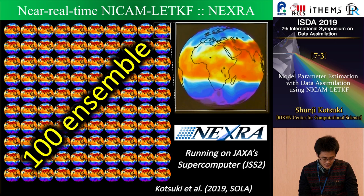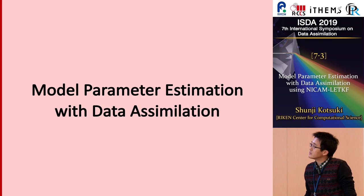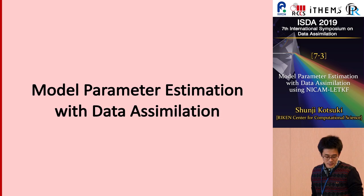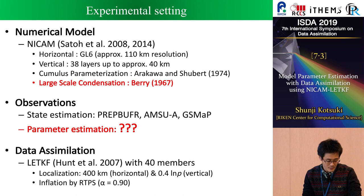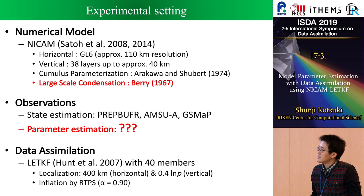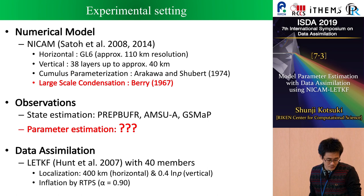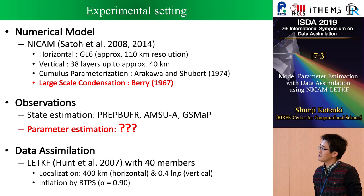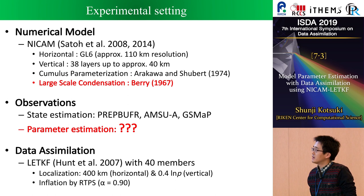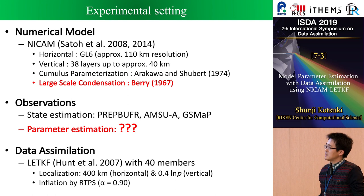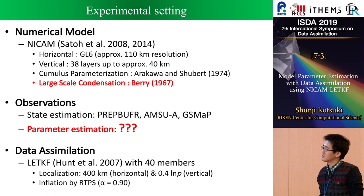In this study, we use NICCAM-LETKF and would like to optimize the parameters of the global atmospheric model using the data assimilation system. We use the relatively coarser resolution version of NICCAM at approximately 100 kilometers horizontal resolution, and we use mainly two parameterizations: cumulus parameterization and large-scale condensation. In this study, we focus on large-scale condensation. Our NICCAM-LETKF assimilates AMSR radiances and GSM precipitation as observations, and an important question is how to choose observations to tune the parameters.